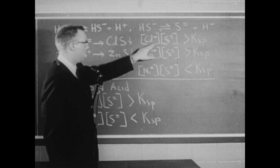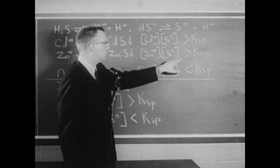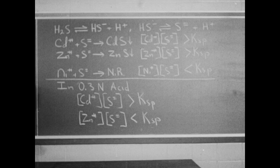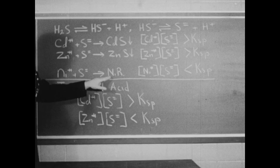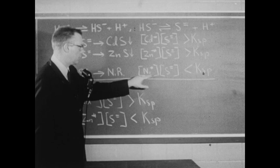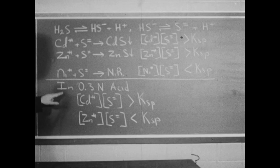Therefore, the product of the concentration of the cadmium ion times the sulfide ion concentration must be greater than the solubility product constant for cadmium sulfide. And the same thing must be true for zinc sulfide, since both of these sulfides precipitated. However, with the nickel ion, hydrogen sulfide did not cause the precipitation of nickel sulfide. Therefore, an insufficient quantity of sulfide ions were present, and the product of the nickel ion concentration and the sulfide ion concentration was less than the solubility product constant for nickel sulfide.